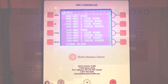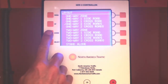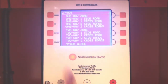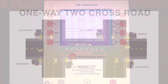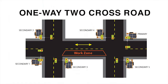One Way Two Crossroads requires the primary and secondary one on the one-way road. Secondary two and three will be the first two-way crossroad, and secondary four and five will be the other two-way crossroad.